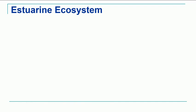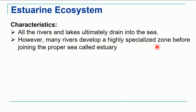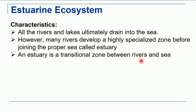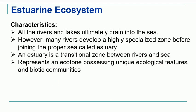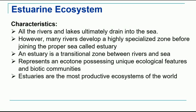All rivers and lakes ultimately drain into the sea. However, many rivers develop specialized zones before joining the sea. The area where the river joins the ocean or sea — that area of transition — is called an estuary. It represents an ecotone, which is a transition area between two ecosystems. Here we have a river ecosystem and an ocean ecosystem, so the transition area is the ecotone, and we see the features of both ecosystems. Estuaries are considered the most productive ecosystems of the world.